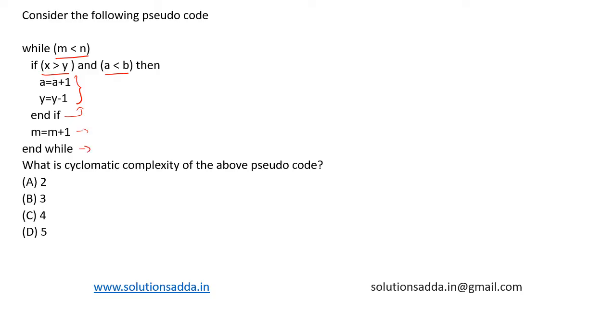Let's draw the control flow graph for the above pseudocode. Initially, we have the while condition. Then we enter the if statement. Based on the if statement's condition,